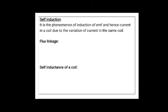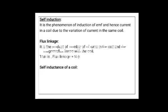Now let us see what flux linkage is. It is the product of the number of turns in the coil and the magnetic flux linked with the coil. Flux linkage can be written as N × φ, where N is the number of turns and φ is the magnetic flux.